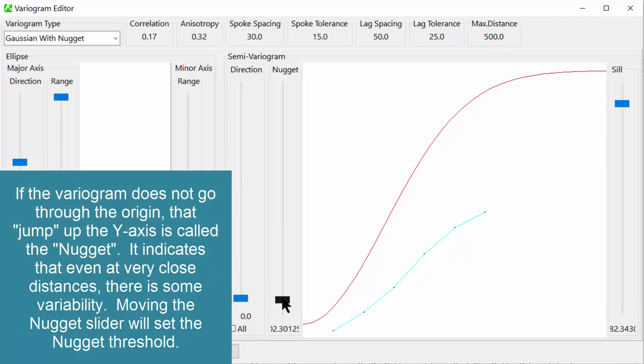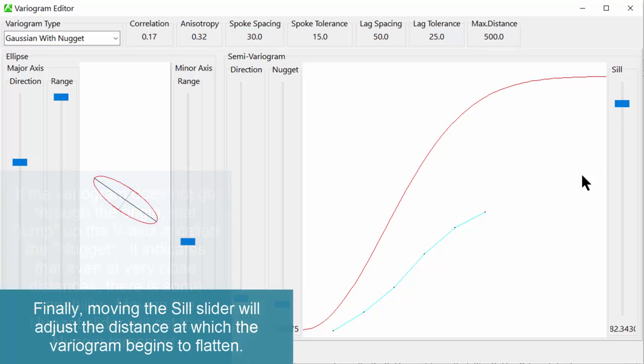If the variogram does not go through the origin, that jump up the y-axis is called the nugget. It indicates that even at very close distances, there is some variability. Moving the nugget slider will set the nugget threshold. Finally, moving the sill slider will adjust the distance at which the variogram begins to flatten.